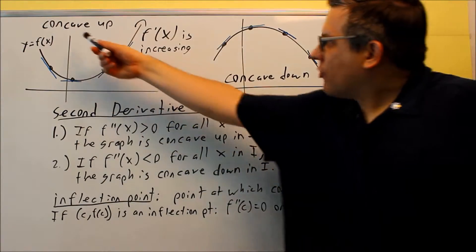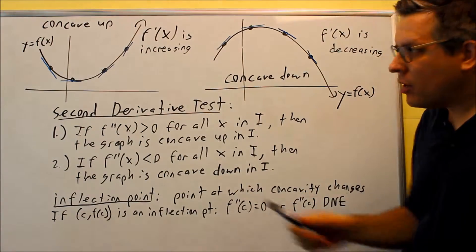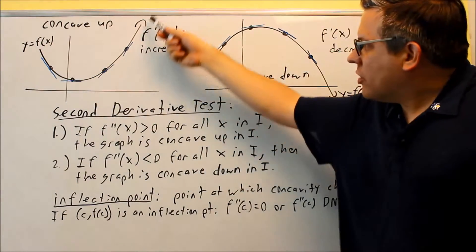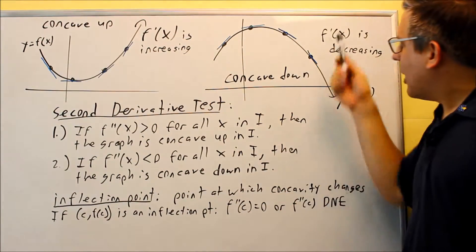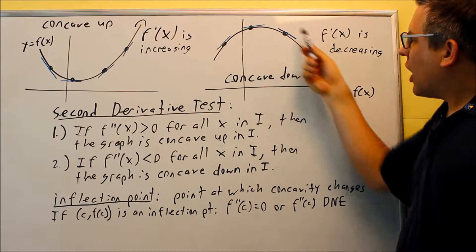So first of all, if you have a line that's concave up, that means that the graph is opening up. And if you have a concave down, that means the graph is opening down.